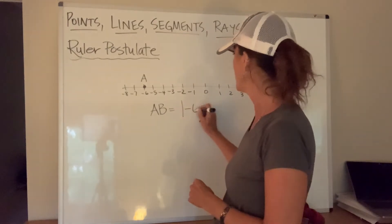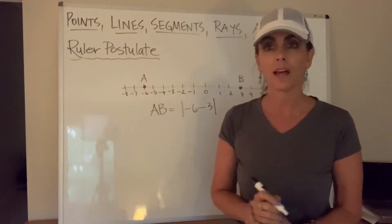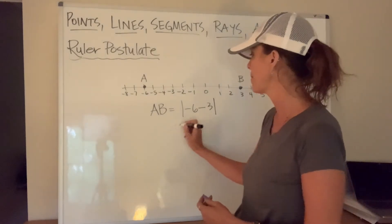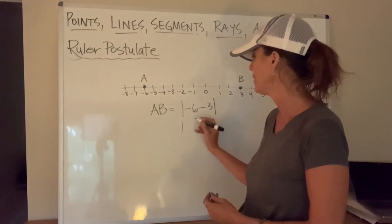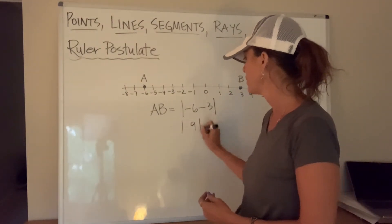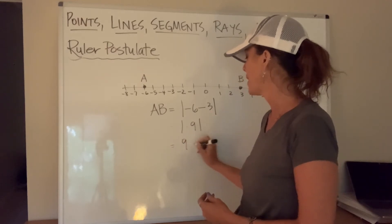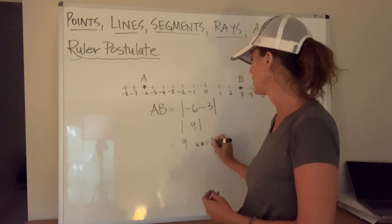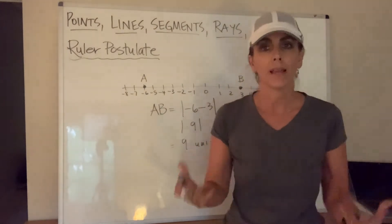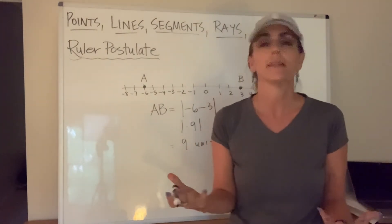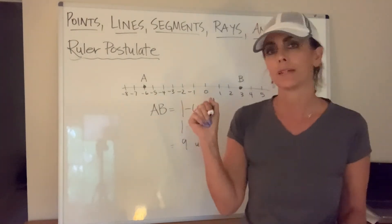Negative six minus three and take the absolute value of that thing. Well, I said that the same as the absolute value of negative nine, which is nine units. All right, and that's as easy as it is. The ruler postulate just comes in handy for this.